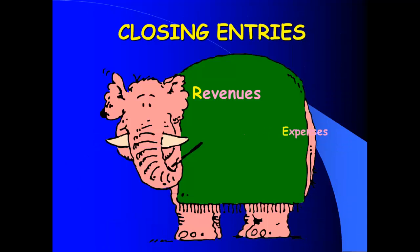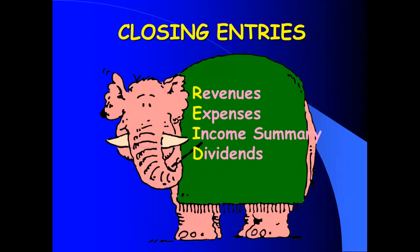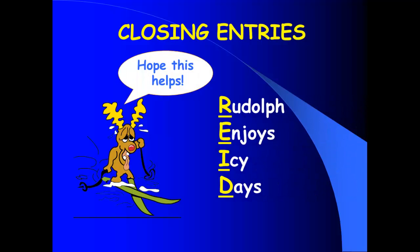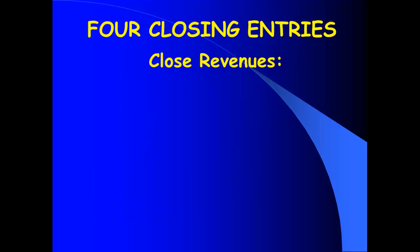We're going to make four closing entries: close out revenues, close out expenses, close out income summary, and close out dividends. The way I would remember that is simply REID — R-E-I-D. I do have a mnemonic sentence: 'Rudolph enjoys icy days,' but I'd probably just go with REID. So let's talk about those entries.